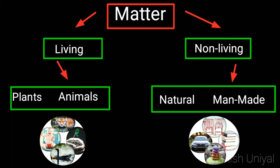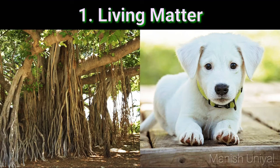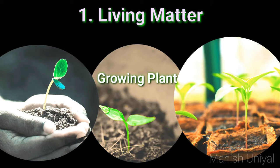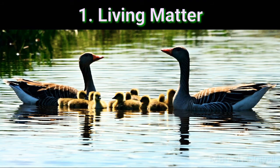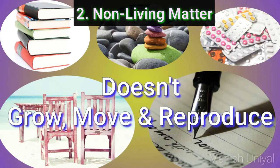Matter can be classified as living matter and non-living matter. In living matter, plants and animals are included, while non-living matter includes natural and man-made things. The earth is the home to all kinds of plants and animals. They can grow, move and reproduce on their own. Most of the matter in the universe is non-living, meaning it does not grow, move or reproduce on its own.